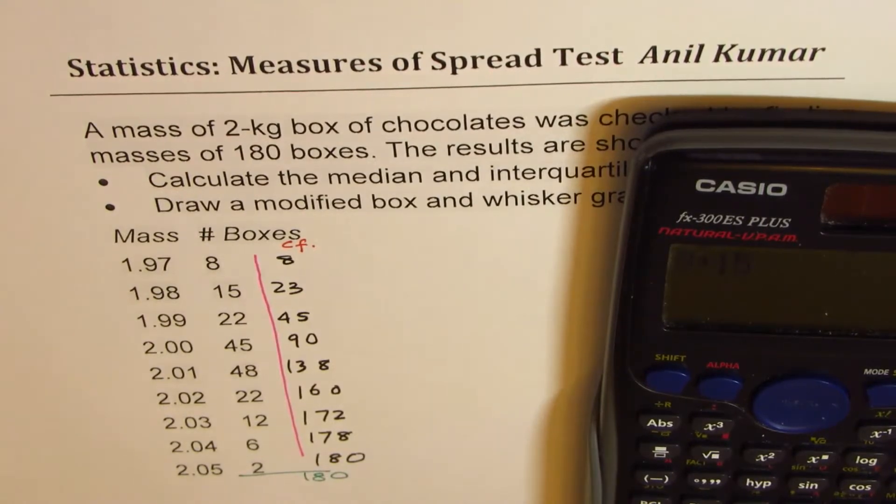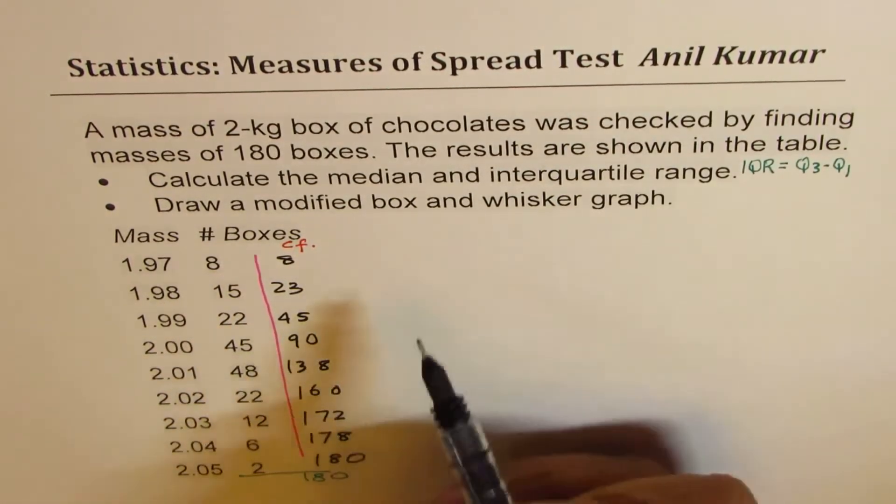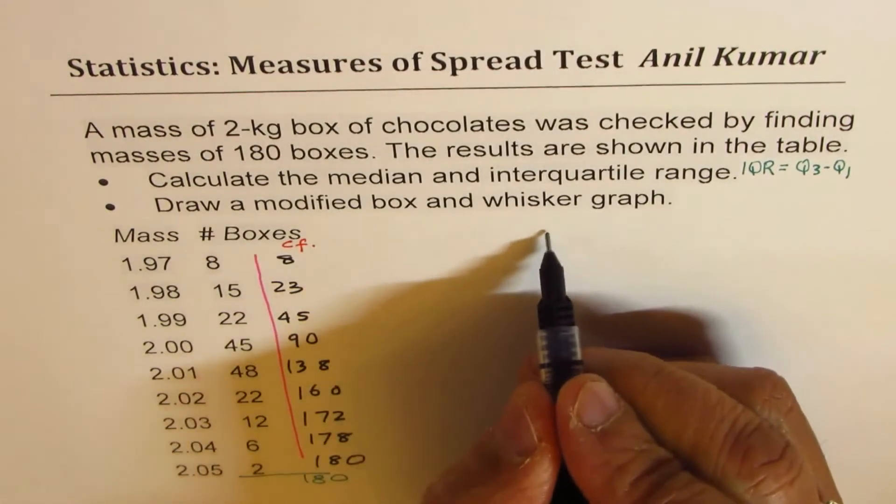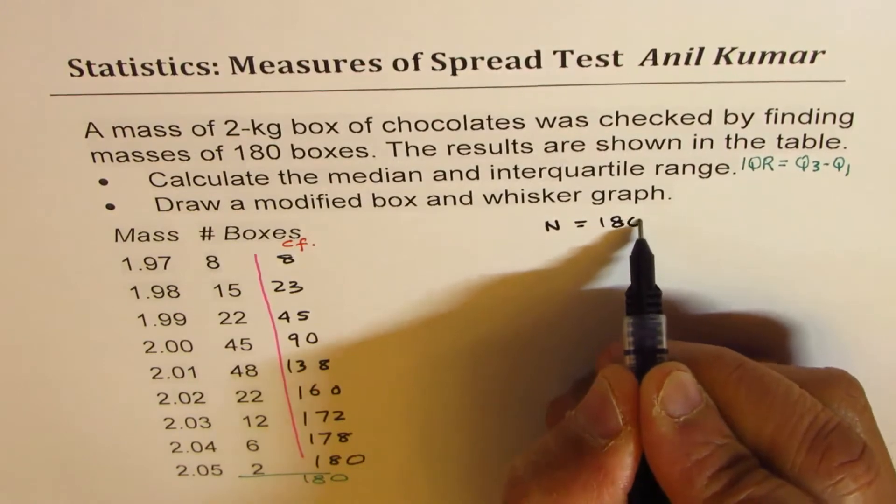So we indeed have 180 boxes. That gives you the cumulative frequency. Now total number is 180, so these are how the calculations should be done. N is 180.